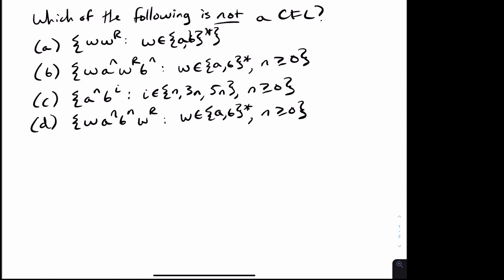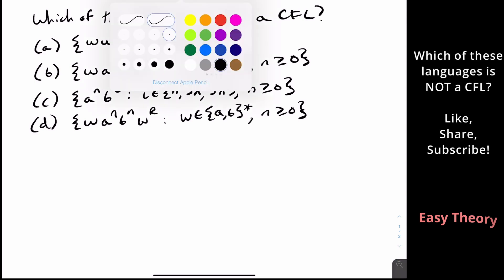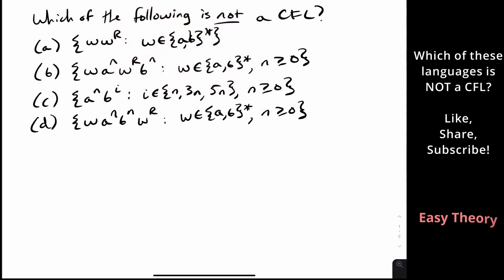Hello and welcome back to another edition of Easy Theory. Today we're going to be looking at this GATE 2019 exam question, which is looking at this list of languages and figuring out which one of them is not a context-free language.